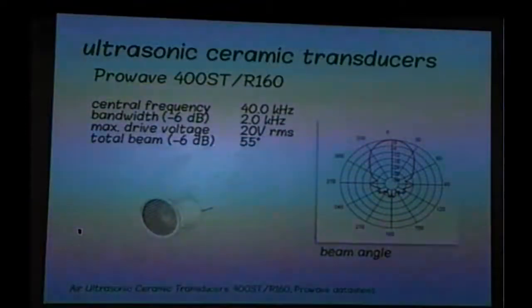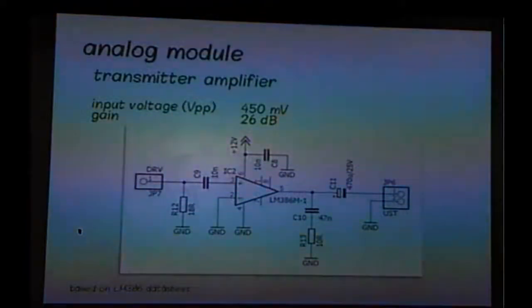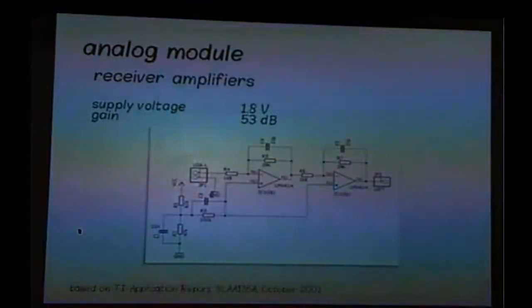The ultrasonic transducers have 40 kilohertz frequency, and the beam angle is approximately 60 degrees, and that's also the angle between the two receivers. The transmitter amplifier uses the very well-known LM386. This is the circuit taken from datasheet. The receiver amplifier is based on LMC614. That's a quad CMOS op-amp, and I use two-stage inverting amplifiers. One power supply, 1.8 volts, and I have a slider to set the virtual volts to 750 millivolts. It's not a midpoint of the power supply, and you will see in a few minutes why I've chosen this value.